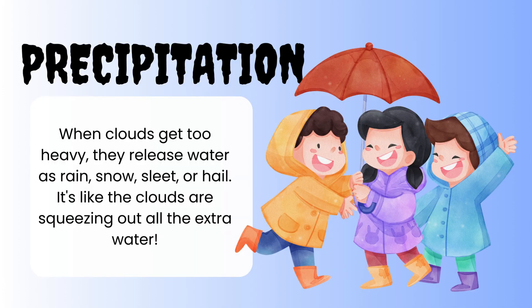Precipitation. When clouds get too heavy, they release water as rain, snow, sleet, or hail. It's like the clouds are squeezing out all the extra water.